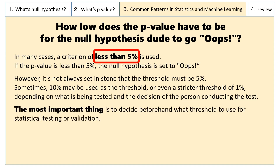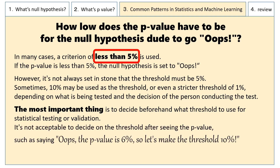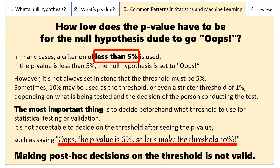The most important thing is to decide beforehand what threshold to use for statistical testing or validation. It's not acceptable to decide on the threshold after seeing the p-value — for example, saying "the p-value is 6%, so let's make the threshold 10%." Making post-hoc decisions on the threshold is not valid.